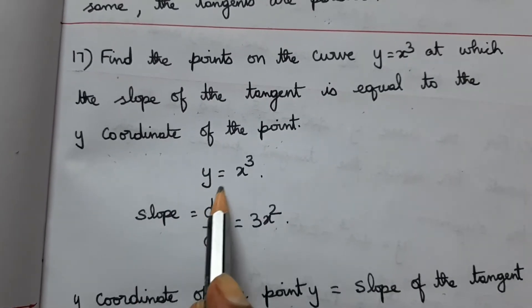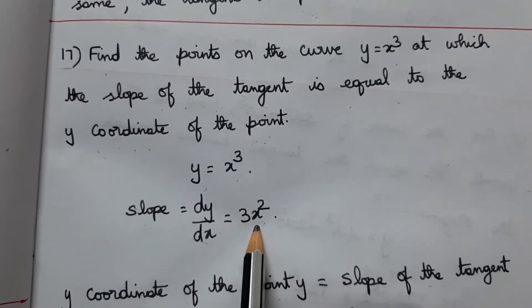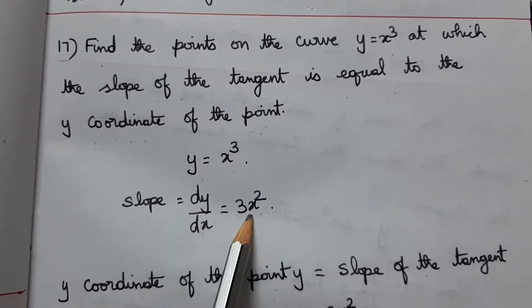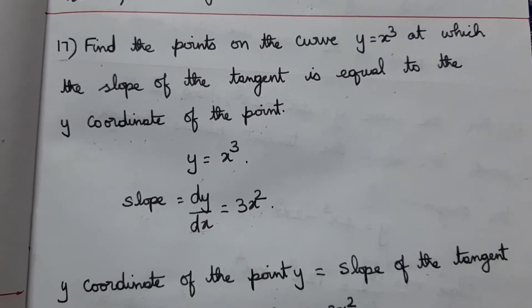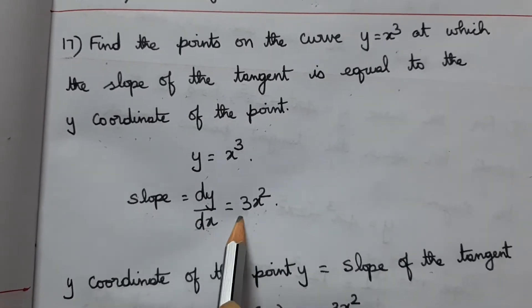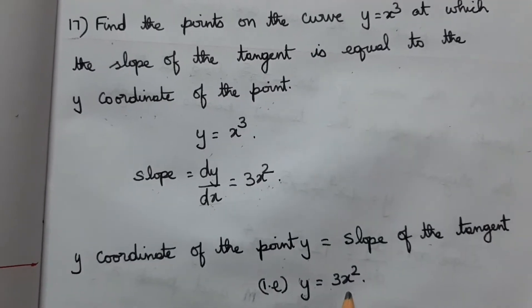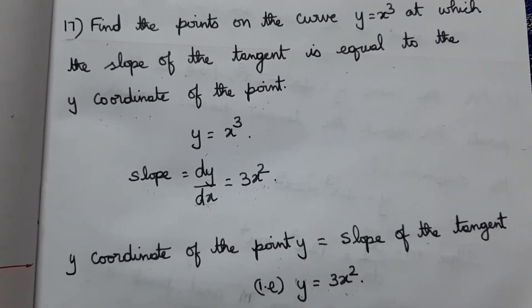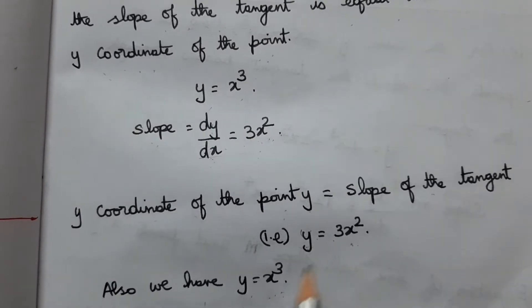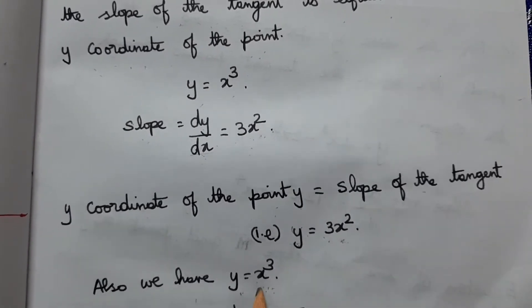For the curve y = x³, the slope of the tangent is dy/dx = 3x². Setting the slope equal to the y-coordinate: 3x² = y = x³. So 3x² = x³, which gives x³ - 3x² = 0.